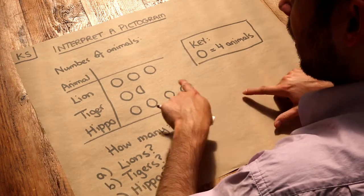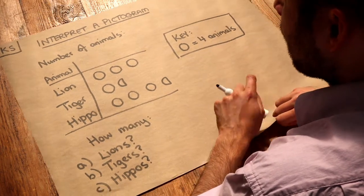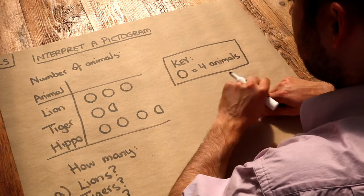So we might want to work out how many lions there are, how many tigers there are, and how many hippos there are. Now all we need to do is look at the key to see what each of these symbols is worth.